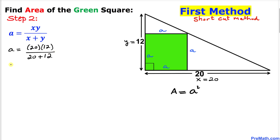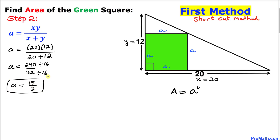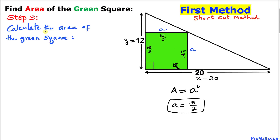So a equals 240 divided by 32, which simplifies to 15 divided by 2. Therefore our side length turns out to be 15/2. Now let's go ahead and calculate the area of this green square.